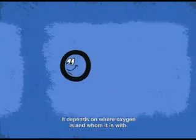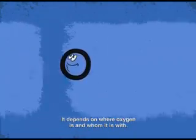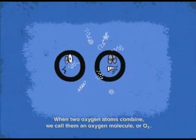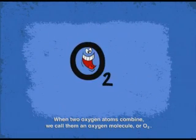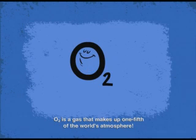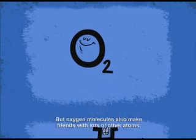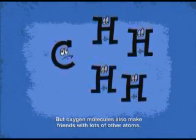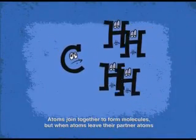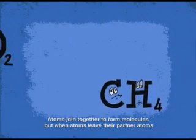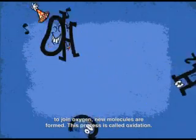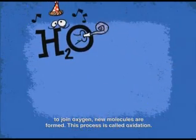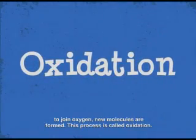It depends on where oxygen is and whom it is with. When two oxygen atoms combine, we call them an oxygen molecule, or O2. O2 is a gas that makes up one-fifth of the world's atmosphere. But oxygen molecules also make friends with lots of other atoms. Atoms join together to form molecules, but when atoms leave their partner atoms to join oxygen, new molecules are formed. This process is called oxidation.